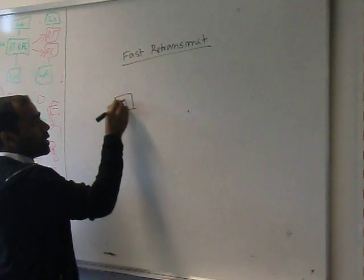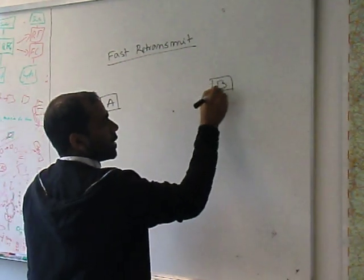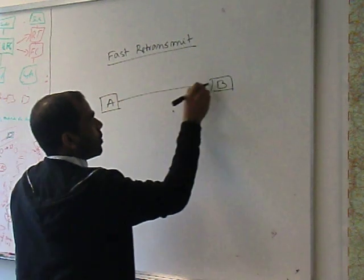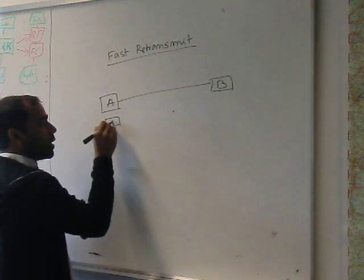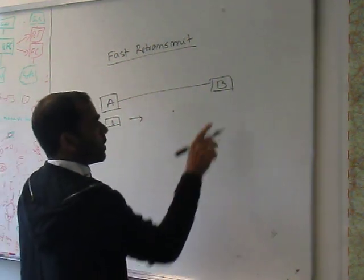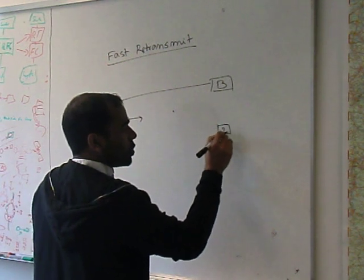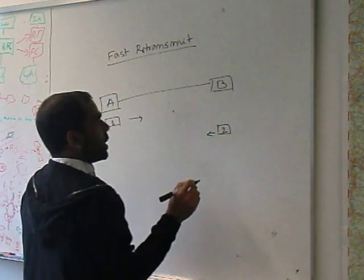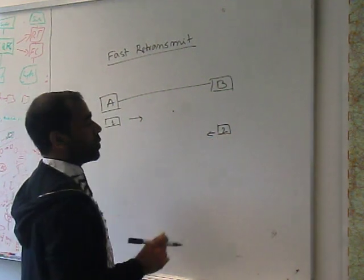Let us assume that there are two stations, station A and station B. Station A sends a packet number 1, and when it has been received by station B, then it sends the acknowledgement telling that I received packet number 1, please send me packet number 2.